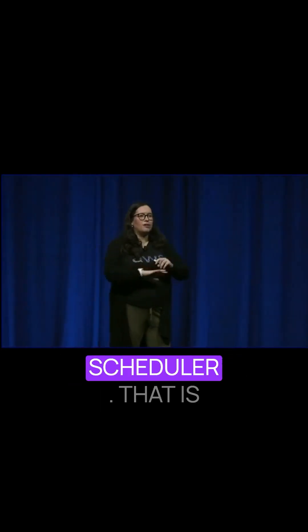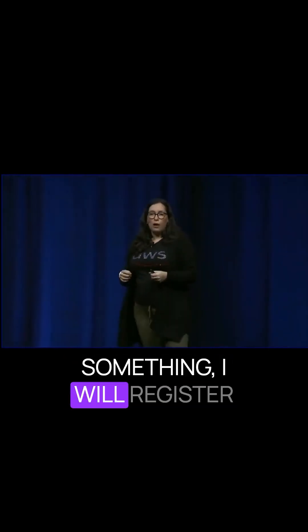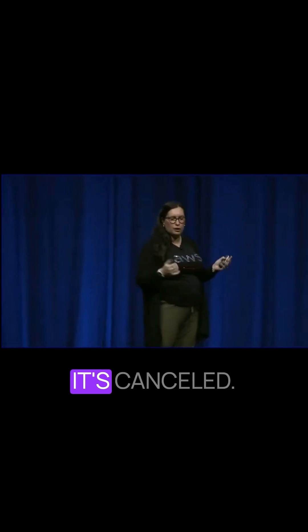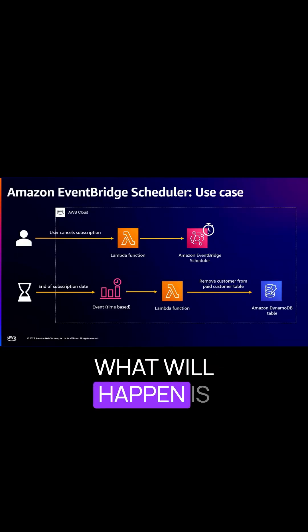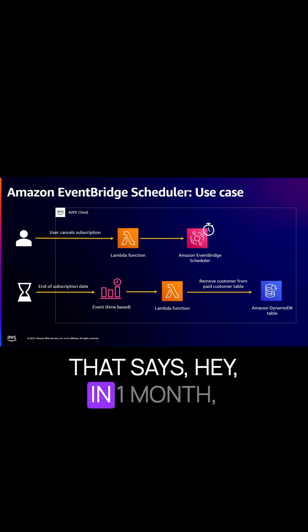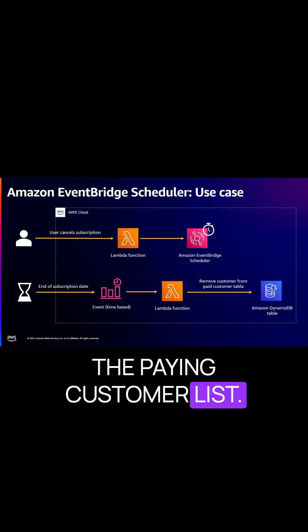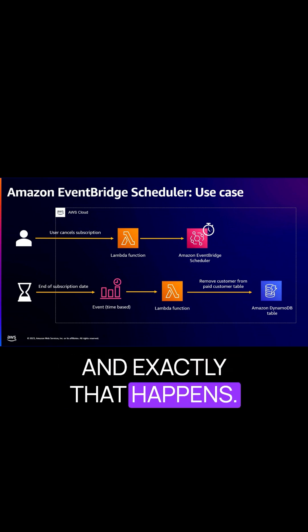Let's look at an example with Scheduler: cancelling a subscription. I'm the type of person who will watch one season of something, register to the streaming service, and cancel it right away — but still have one month of subscription valid. If this service was using Scheduler, a Lambda function would create a new schedule that says: in one month, remove this person from the paying customer list. When the month comes, that schedule gets triggered and exactly that happens.